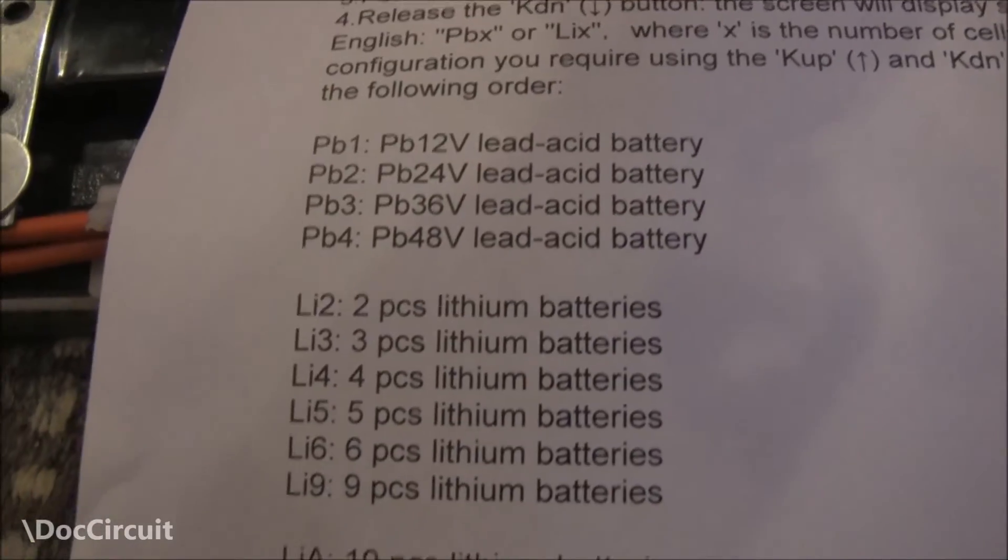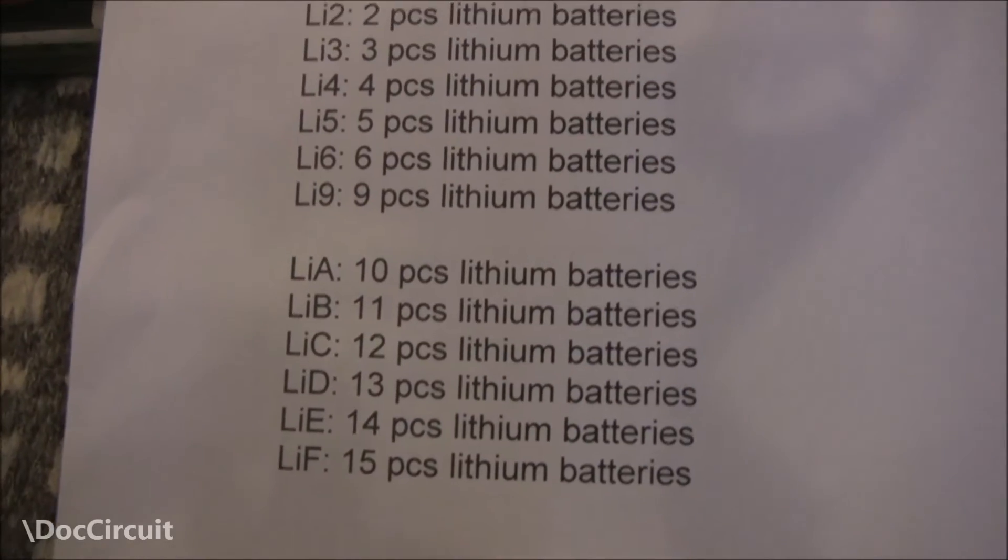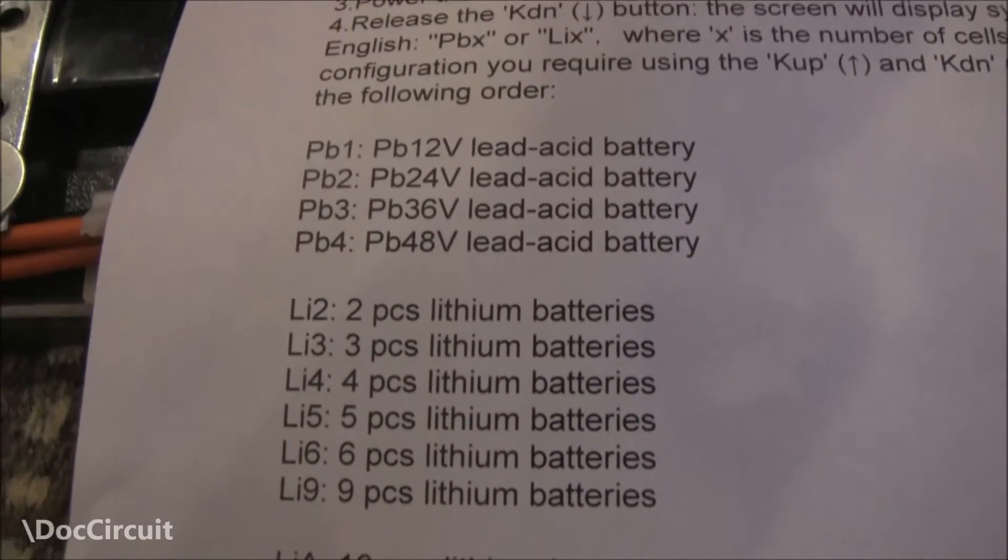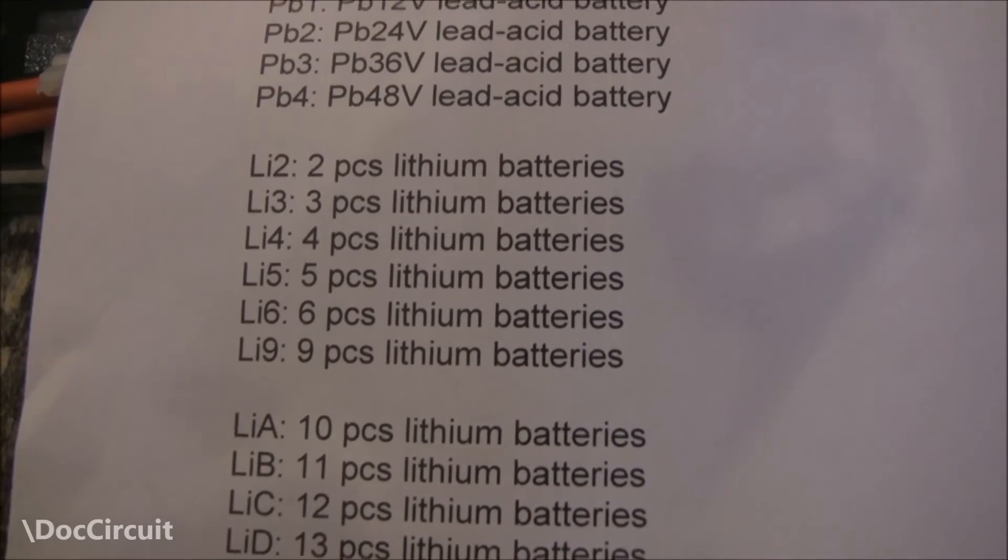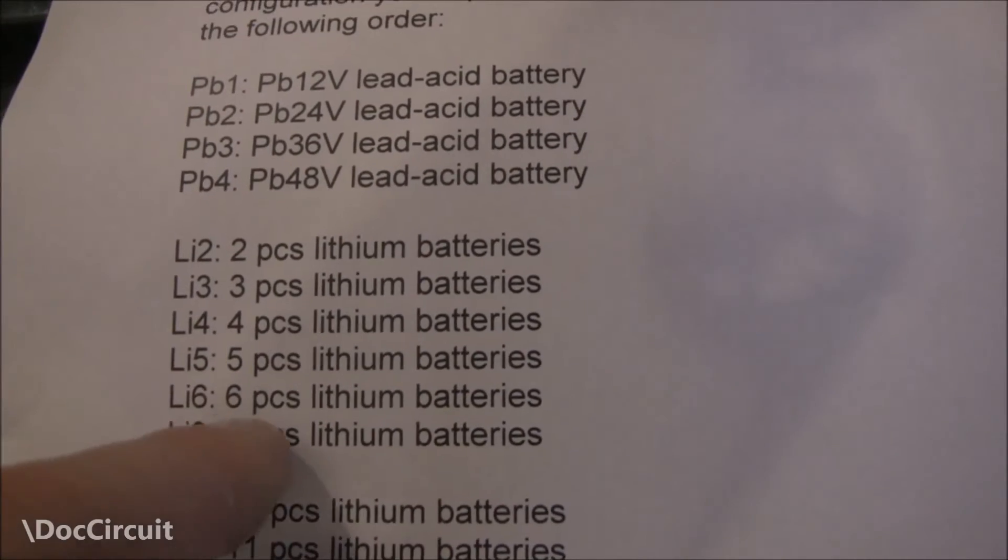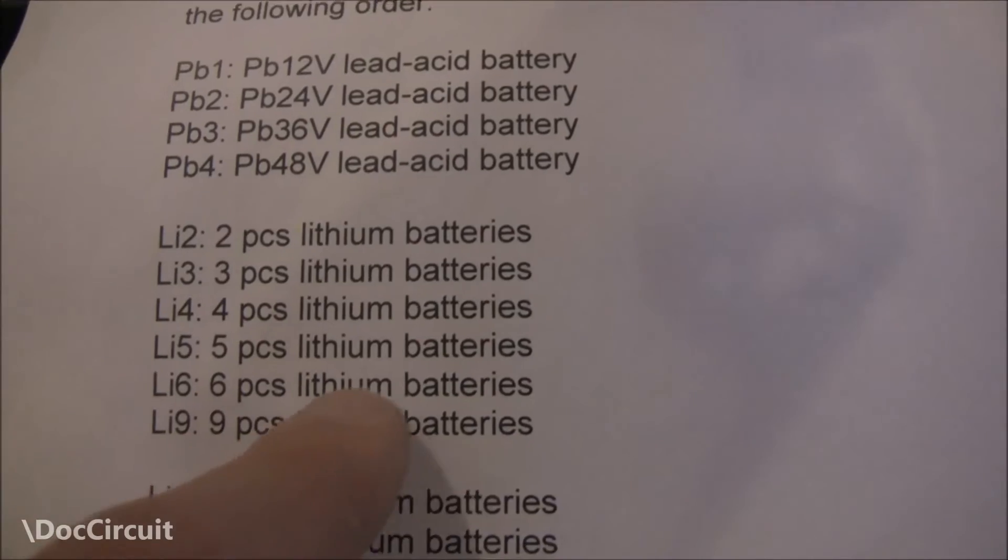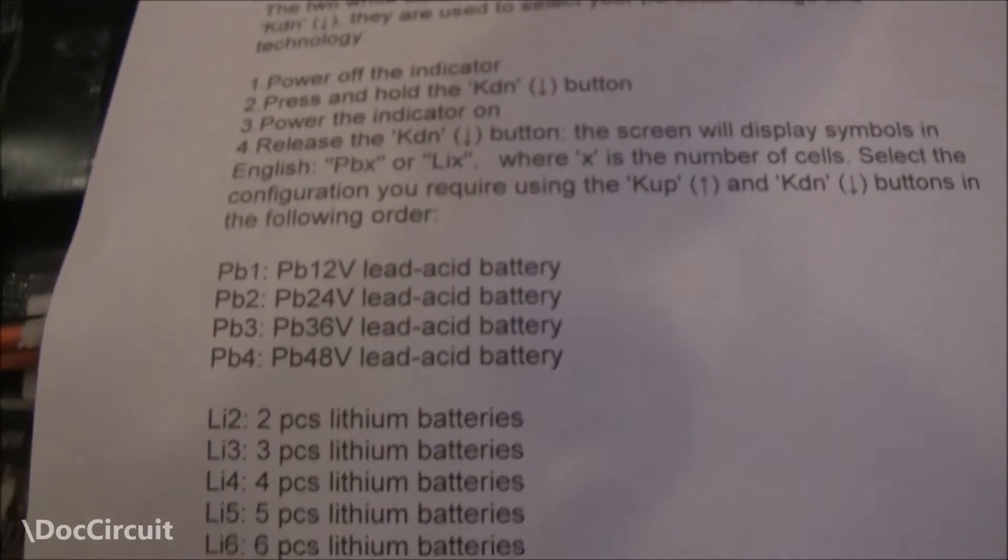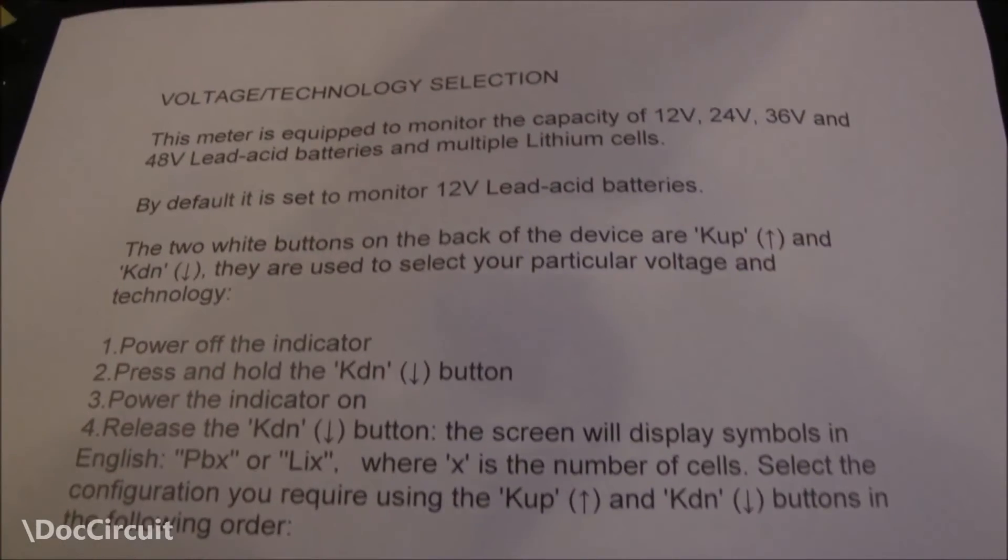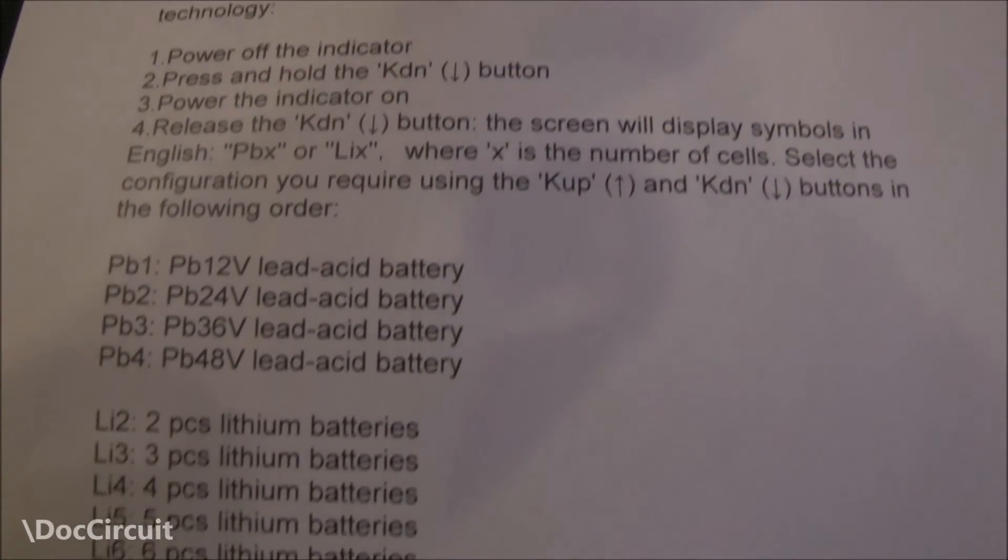That will show you various options. The options represent a code. Each entry in the code refers to a particular configuration of batteries. In our case, we have a 6 cell lithium battery, so we're looking for LI6. I'll just scroll through this and you can pause it if you want to have a look at it.